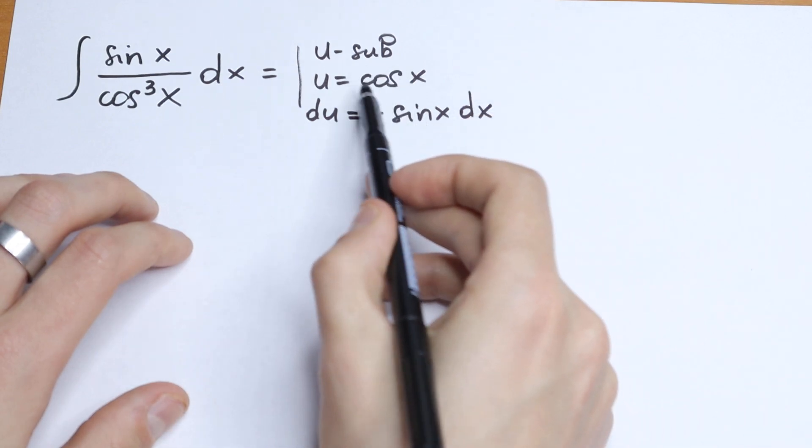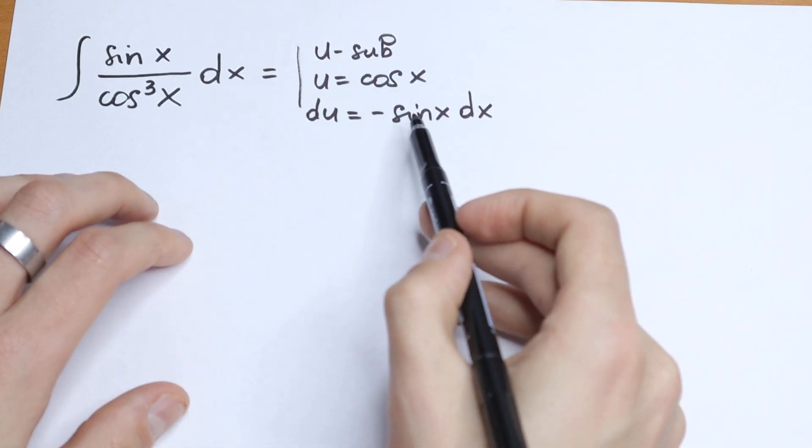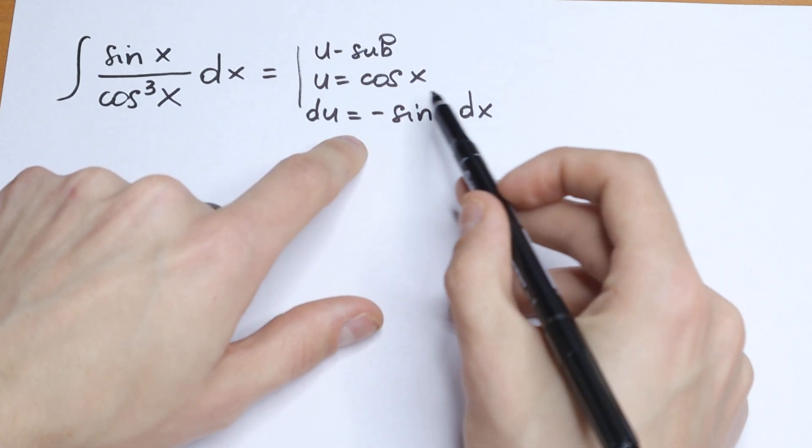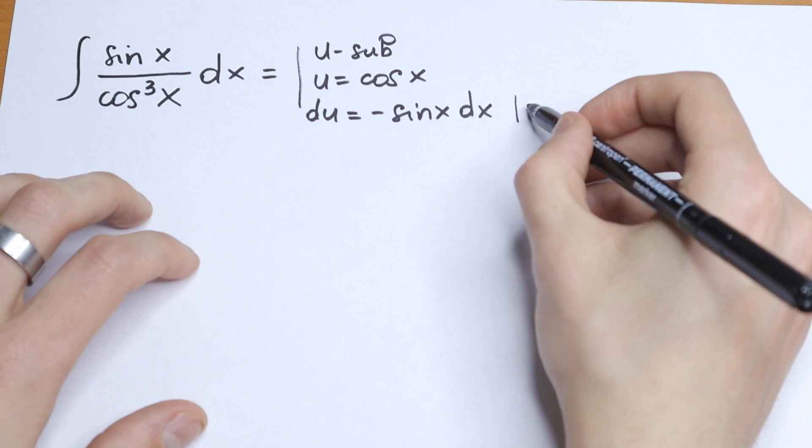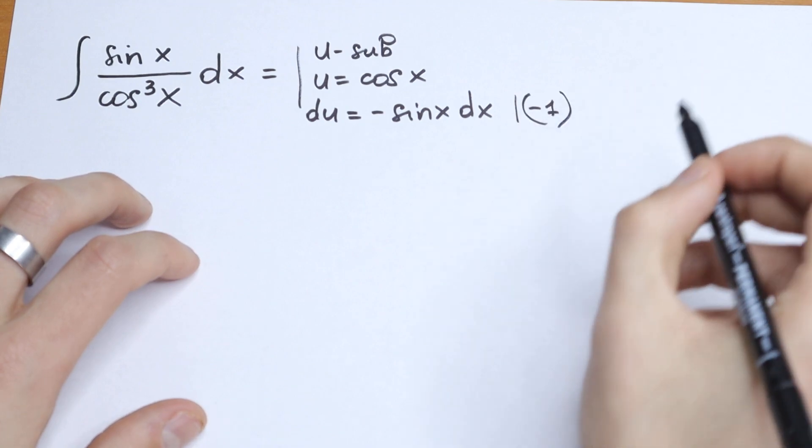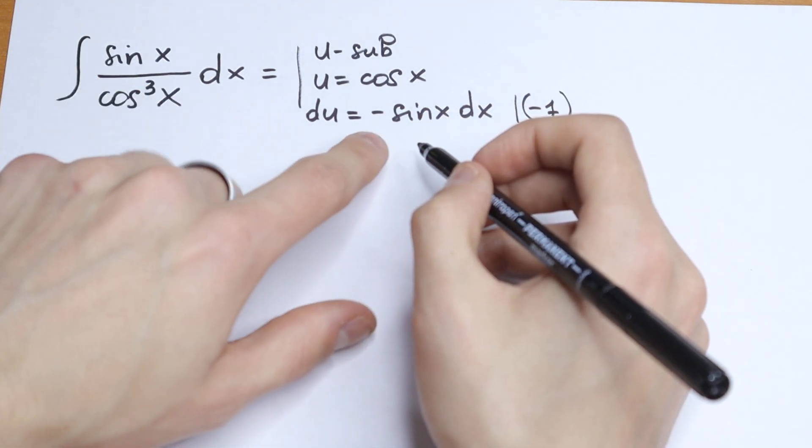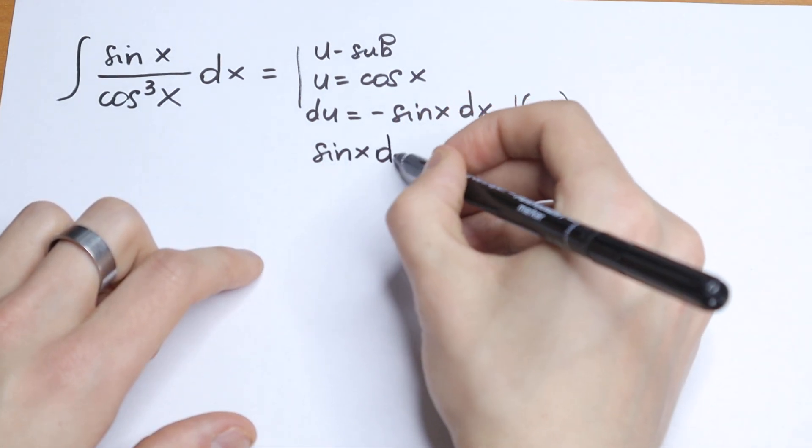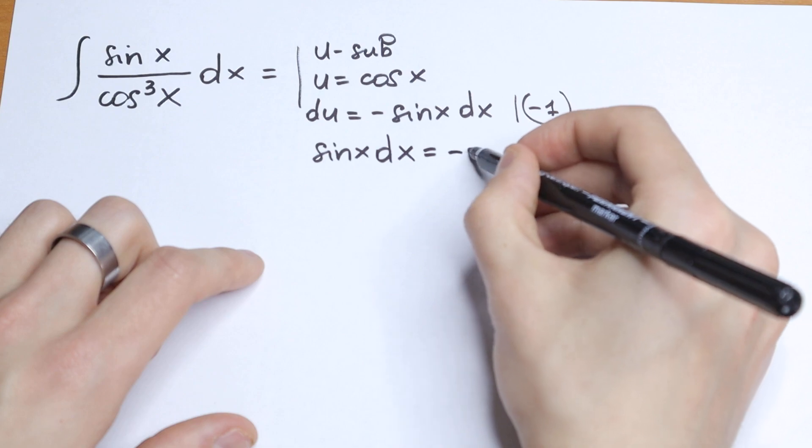So this is a table case. Derivative of cosine will be minus sine x. And moreover, let's multiply this on the right and on the left by minus one. So if you multiply this by minus one, we will have that sine x dx will be equal to minus du.